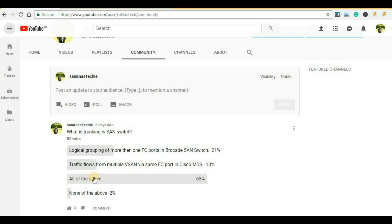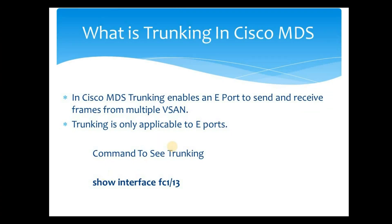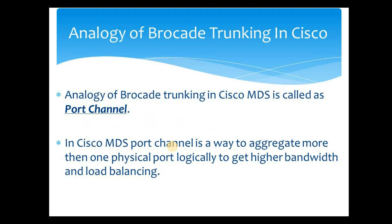The answer is all of the above. Now the question comes: what is the terminology used for logical combination of FC ports in Cisco MDS? The answer is port channel. The analogy of Brocade trunking in Cisco MDS is called port channel. In Cisco MDS, port channel is a way to aggregate more than one physical port logically to get higher bandwidth and load balancing. I have already created an entire video on port channel in Cisco MDS — click the i button on top of this video for the full explanation.